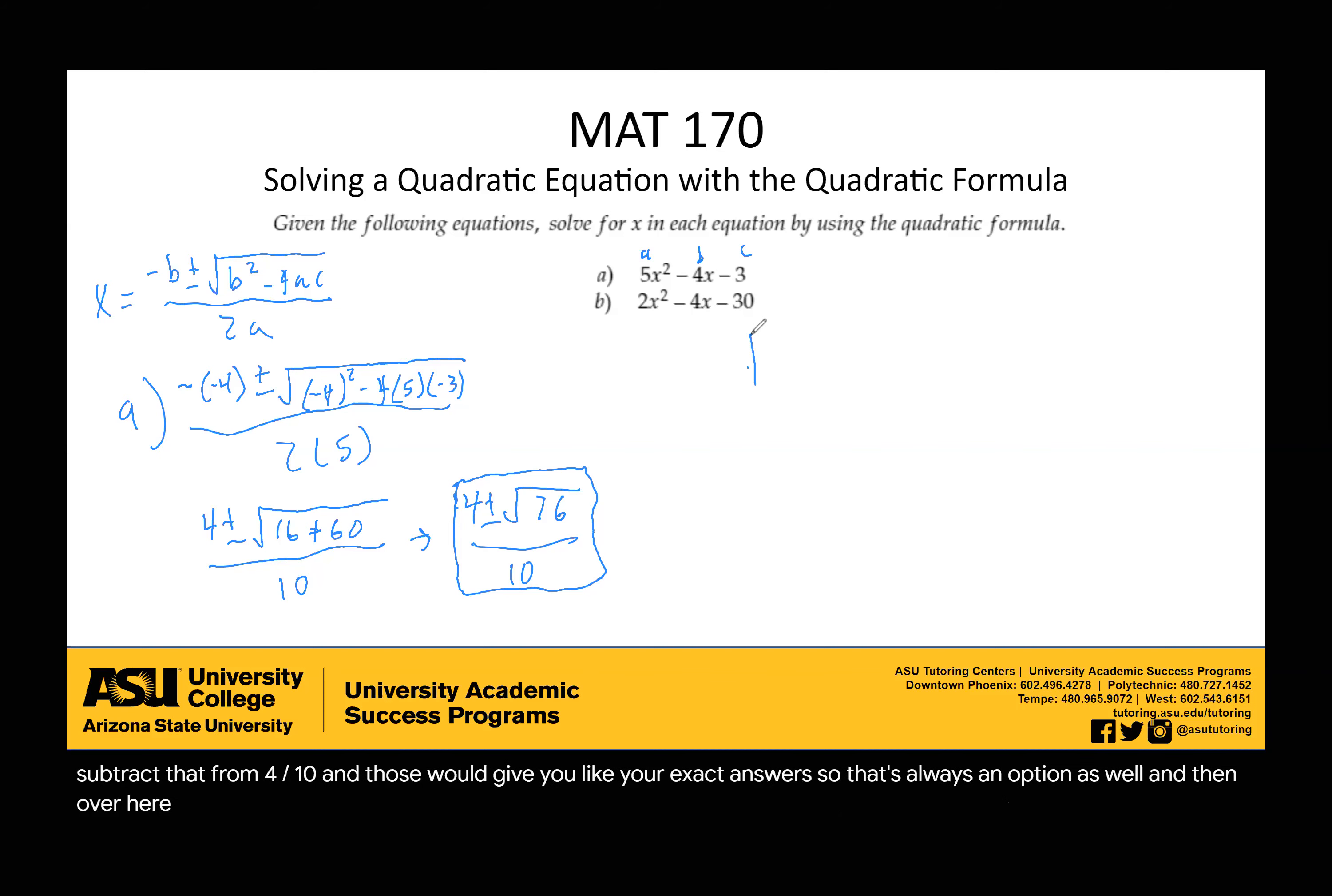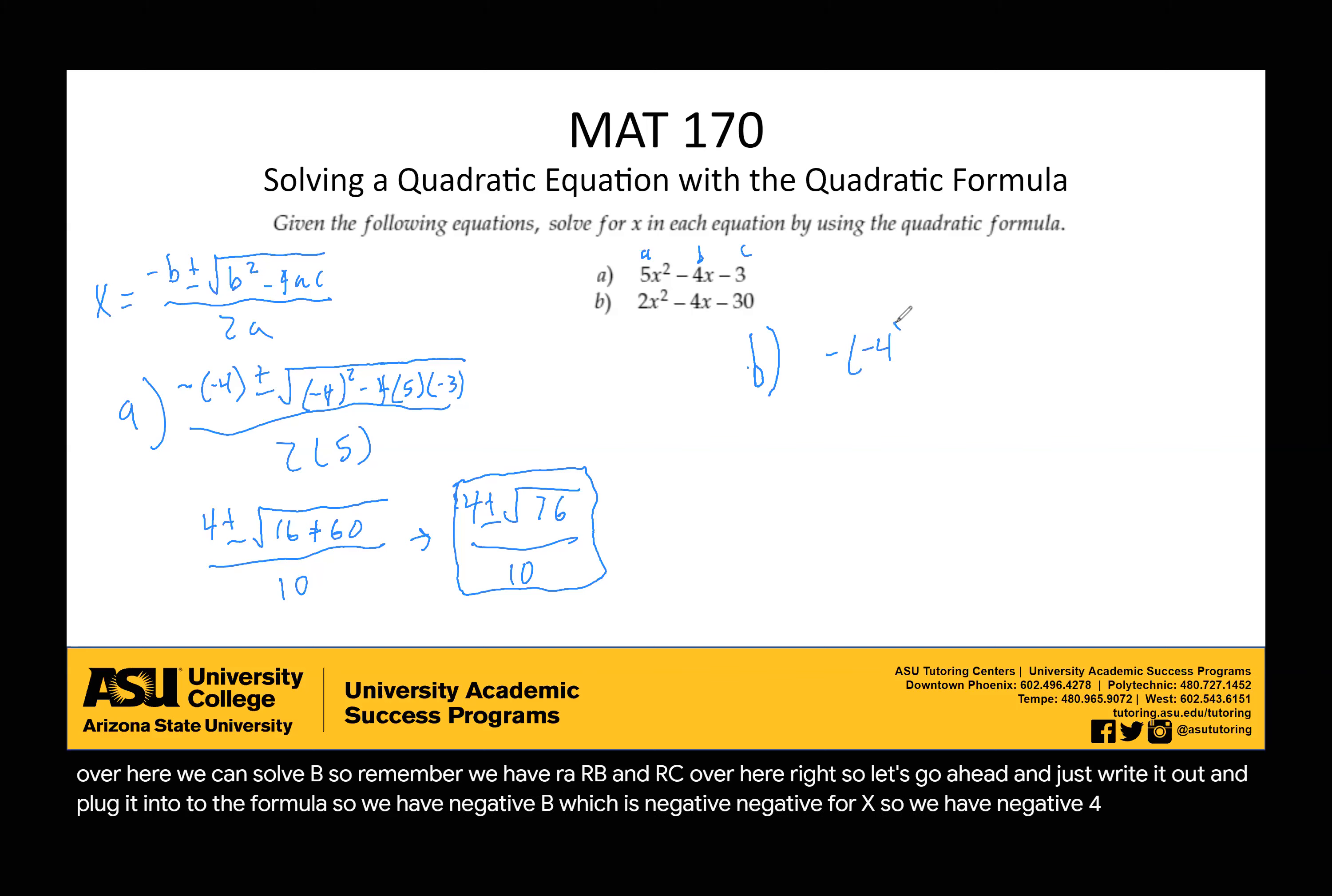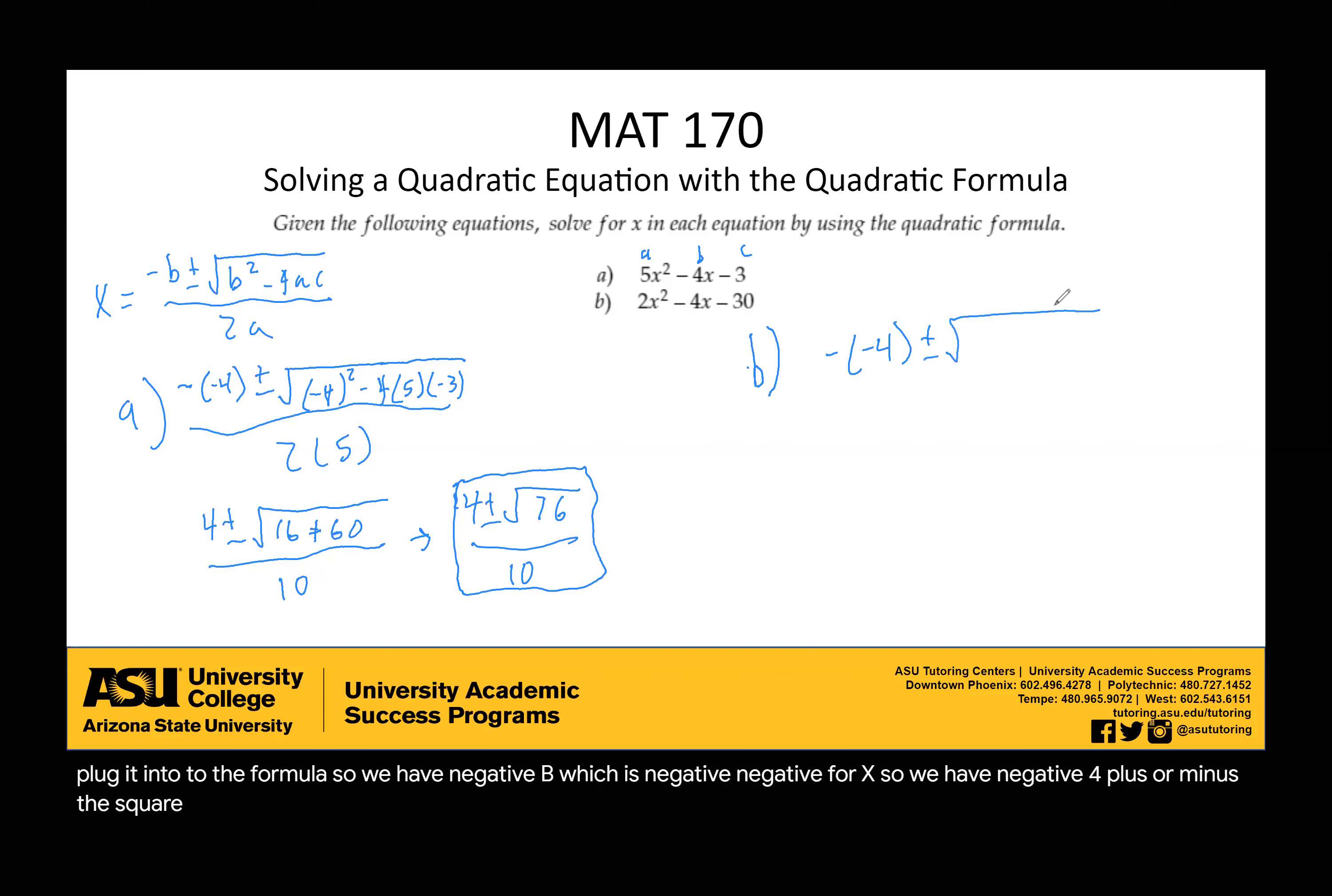And then over here, we can solve b. So remember, we have our a, our b, and our c over here, right? So let's go ahead and just write it out and plug it into the formula. So we have negative b, which is negative negative 4. So we have negative 4 plus or minus the square root of our b squared. So negative 4 squared minus 4 times our a, which is 2, and then c is negative 30. And then all of this is divided by 2a.